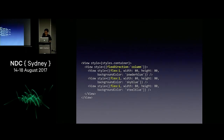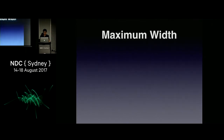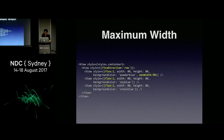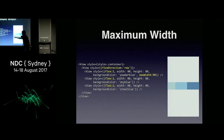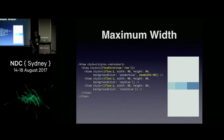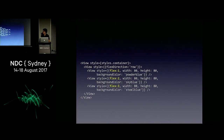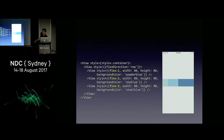If I specify flex direction column with flex 1 for each view, they'll fill the screen vertically in equal parts. I can specify a maximum width — say max width 90 for the first view — and the remaining space gets divided equally among the second and third views. I can also specify flex ratios like 1, 2, 3, meaning the space is divided in that ratio.